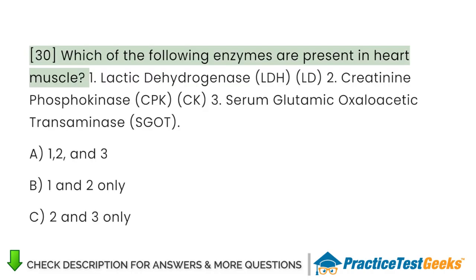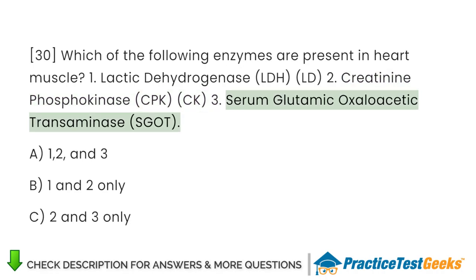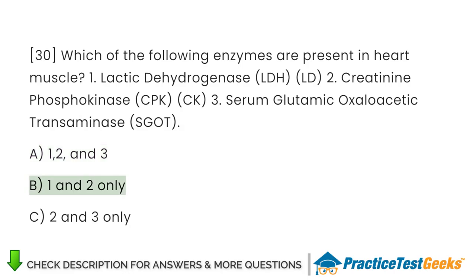Which of the following enzymes are present in heart muscle? 1. Lactic dehydrogenase (LDH/LD). 2. Creatine phosphokinase (CPK/CK). 3. Serum glutamic oxaloacetic transaminase (SGOT). A. 1, 2, and 3. B. 1 and 2 only. C. 2 and 3 only.